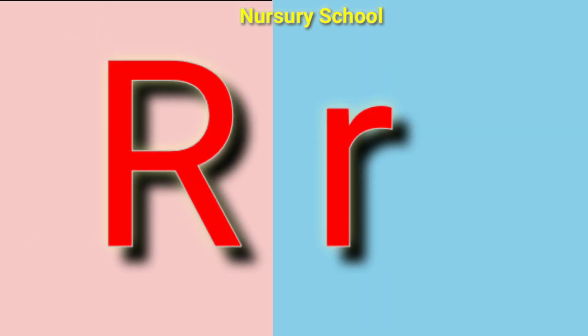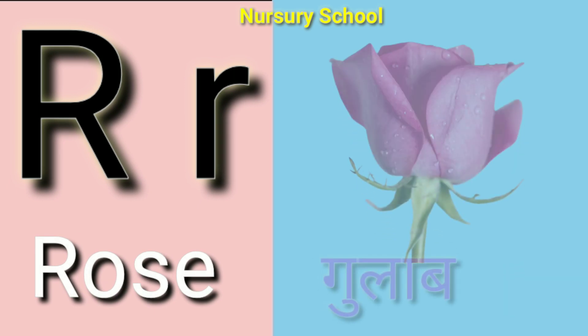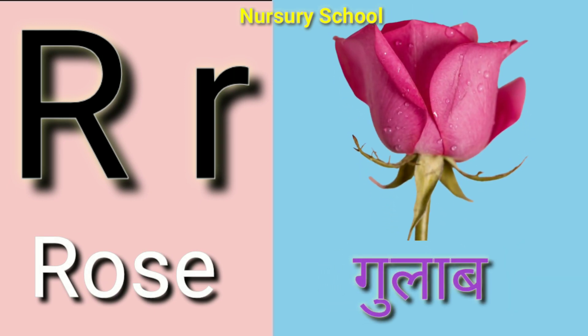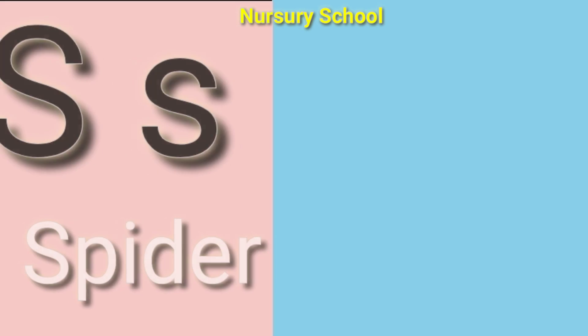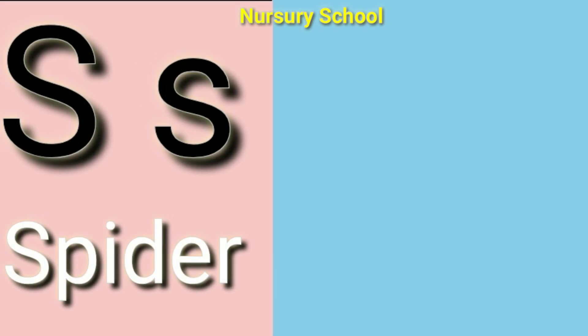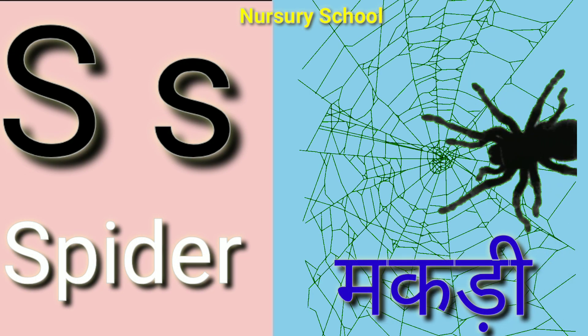R for rose, rose means gulab. S for spider, spider means makadi.